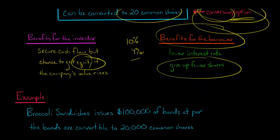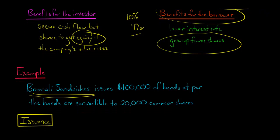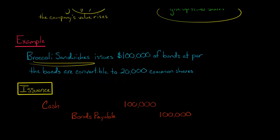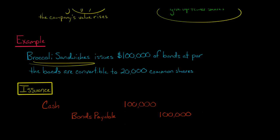So let's get into the journal entries. Broccoli Sandwiches issues $100,000 of bonds at par — I'm doing it at par to get rid of premiums and discounts so we can have a straightforward example. The bonds are convertible to 20,000 common shares. So the company that is borrowing the money is going to debit cash for $100,000 and credit bonds payable for $100,000. Under U.S. GAAP, there's no equity line item here — we're just accounting for this as a liability.